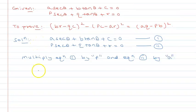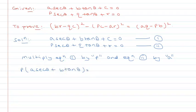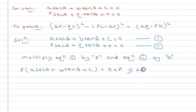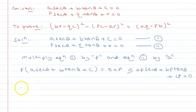Multiplying equation 1 by P: P·(a·sec θ + b·tan θ + c) = 0, which gives AP·sec θ + BP·tan θ + CP = 0.